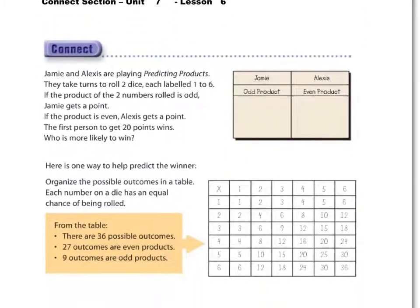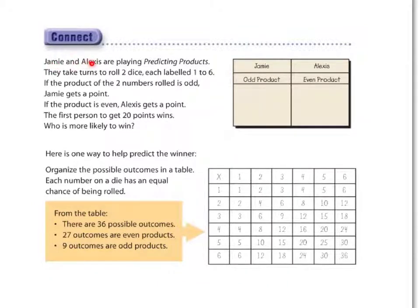Let's take a look here. We have Jamie and Alex who are playing Prediction Products. Products, remember, means to multiply — it's the answer with multiplication. So they take turns rolling two dice, each labeled one to six, so normal dice. If the product of the two numbers rolled is odd, Jamie gets a point. If the product is even, Alexis gets a point. The first person to get 20 points wins.